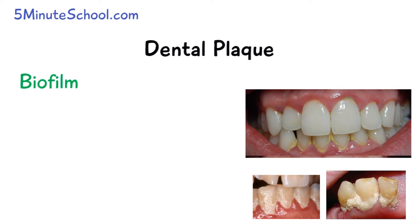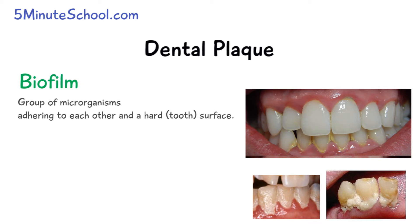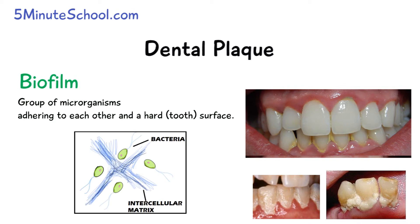Plaque functions as a biofilm, which means we have a group of microorganisms in close contact with each other, attached to a hard surface like the teeth. There is an intercellular matrix — the space between the bacterial cells — which is filled with a gel-like substance that provides a nutrient supply to the various bacteria in the plaque, enabling them to grow and eventually cause gingival and periodontal disease.